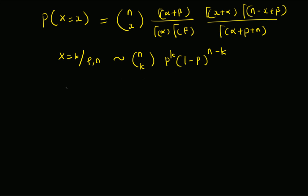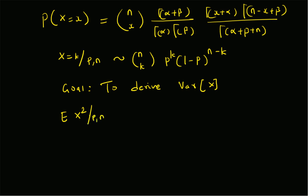Our goal is to derive the variance of X. This can be done using the conditional second moment. The conditional second moment, E[X² | p, n], equals the conditional variance of a binomial random variable, which is np(1-p), plus the square of the mean, which is n²p². That is equation 1.